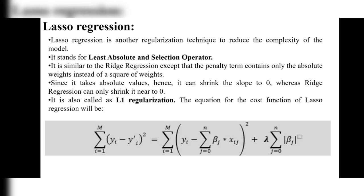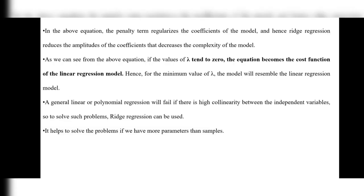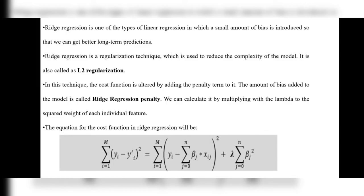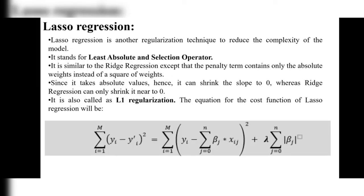Next, lasso regression. Lasso regression is another regularization technique to reduce the complexity of the model. LASSO stands for Least Absolute Shrinkage and Selection Operator. It is similar to ridge regression except that the penalty term contains only the absolute weight instead of the square of weights — unlike ridge regression, there is no square in the lasso formula.